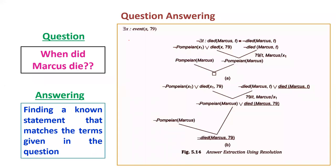The next concept is question answering. Question answering can be arrived at with the following fact of resolution. The question asked is: when did Marcus die? The answer is found by finding a known statement that matches the terms given in the question. Marcus and die are the terms given in the question, and you have to find the match in the statement. We can solve by saying Volcano erupted in AD 79, and x is in Volcano. With this, you can prove and give an answer.